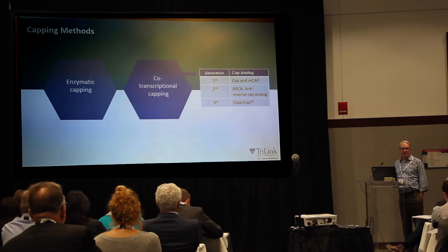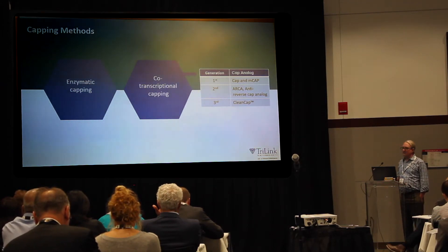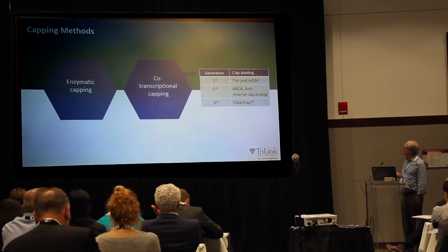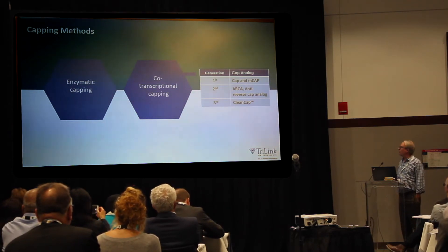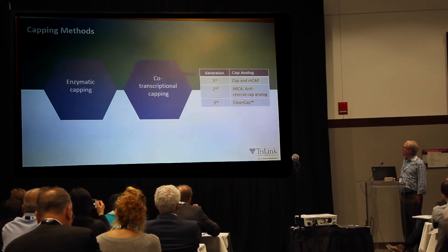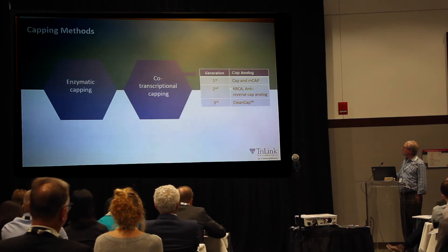There are basically two classes of capping methods used for capping messenger RNAs. The first category is enzymatic capping, in which we make the RNA, generally purify it, and then use vaccinia virus enzymes to cap and methylate the messenger RNA. The second category is co-transcriptional capping, and there are three generations of cap analogs. The first generation was cap or MCAP. Then came a revolution called anti-reverse cap analog. Most recently, we at TriLink developed a new method called CleanCap, which we think is going to be the third generation of capping.